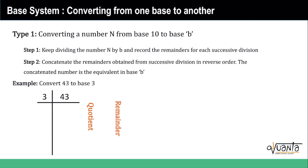So 1 and 2 becomes 12 if you concatenate 1 and 2. You concatenate the remainders obtained from successive divisions in reverse order, which means your last becomes your first and your first becomes your last.